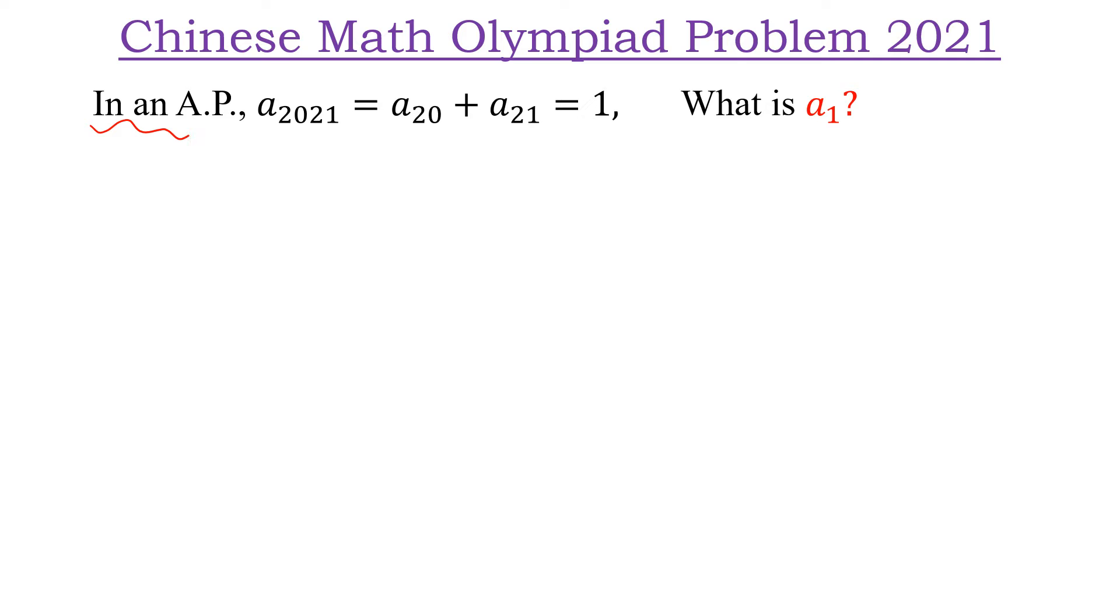We know that in an arithmetic progression, Aₙ is equal to A₁ plus (n minus 1) into D. From here, we can write A₂₀₂₁ is equal to 1 and A₂₀ plus A₂₁ is equal to 1. Using this formula, we can write A₁ plus 2020D is equal to 1. Let this be equation 1.